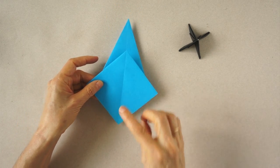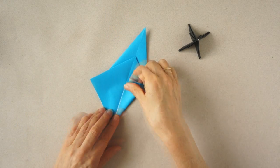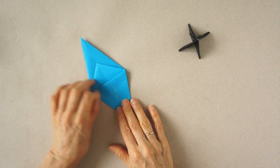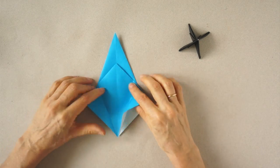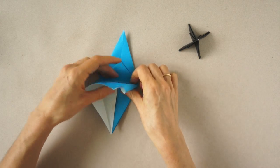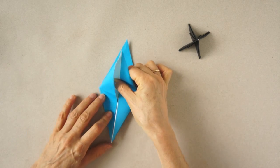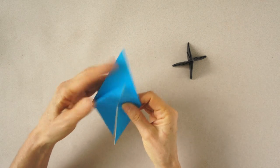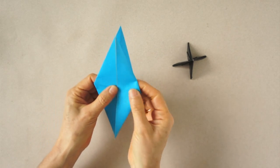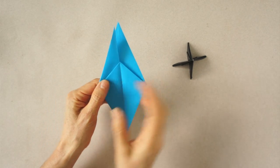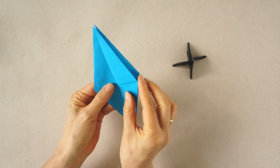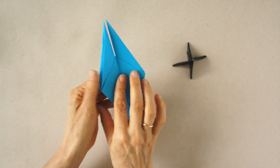Turn it over and repeat on this side. We have these two flaps up. We are going to turn as if turning the page of a book. Turn it over and turn the page of a book.